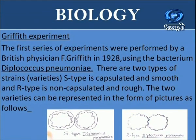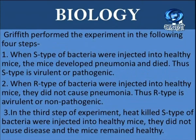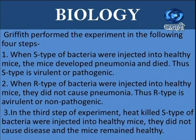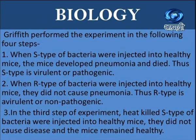Let's see the steps involved in the experiment. In step one, when S-type bacteria were injected into healthy mice, the mice developed pneumonia and died — thus S-type is virulent or pathogenic. In step two, when R-type bacteria were injected into healthy mice, they did not cause pneumonia. In step three, when heat-killed S-type bacteria were injected into healthy mice, they did not cause disease and the mice remained healthy.